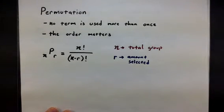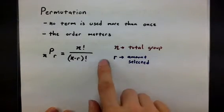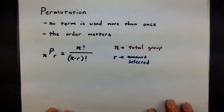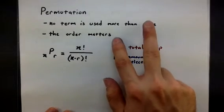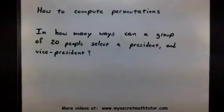In our example problem, watch for this n, the total in the group, and the r, the amount we are selecting. Also take note that these two conditions must be met. Now back to this problem. If I want to look at how many ways a group of 20 can select a president and vice president, first I want to make sure that this really is a permutation.